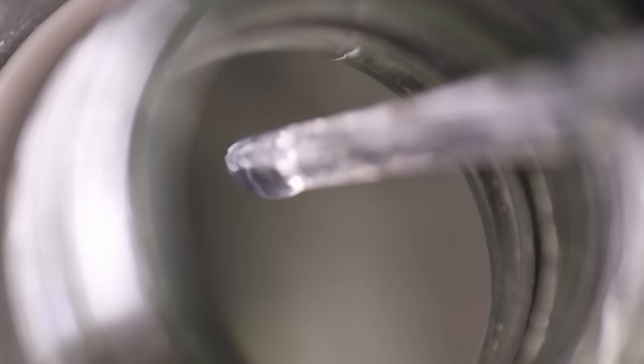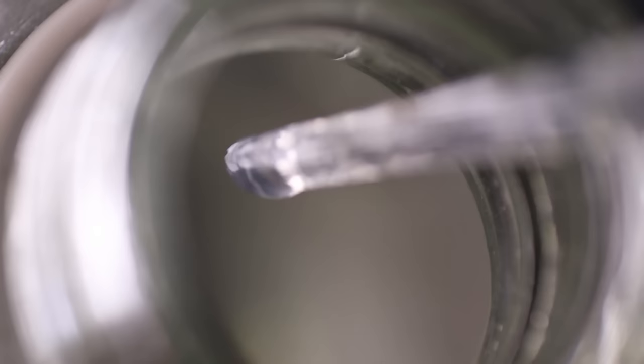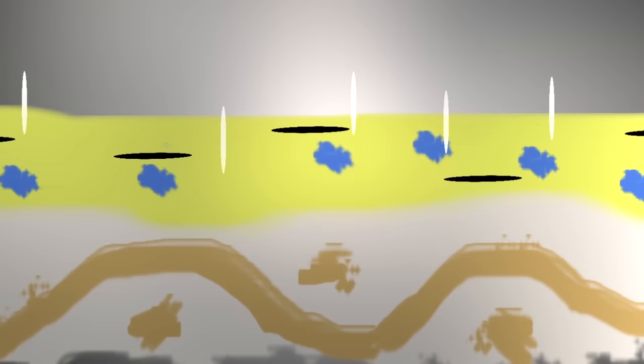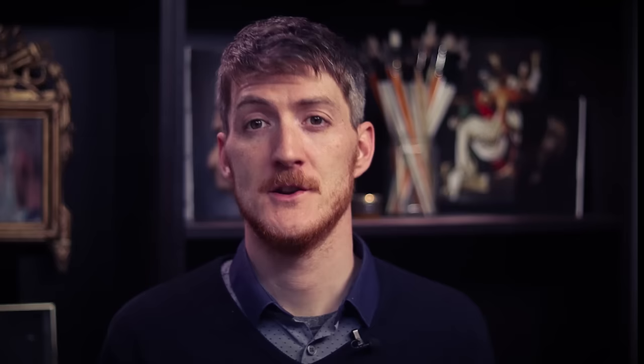The other part of the medium is the solvent, or thinner, or diluent. This is a fluid that works like water for gouache — it evaporates after a few hours. Unlike the oil, the solvent part of the medium will not stay in the paint film. Because the oil affects the paint film and the solvent doesn't stay in the paint film, it is said that the oil is fat and the solvent is lean. Generally you want a good balance between lean and fat.